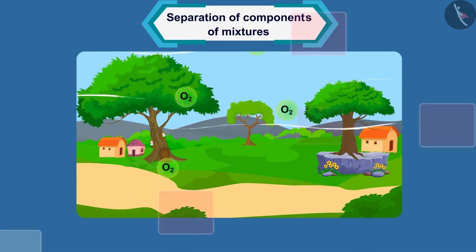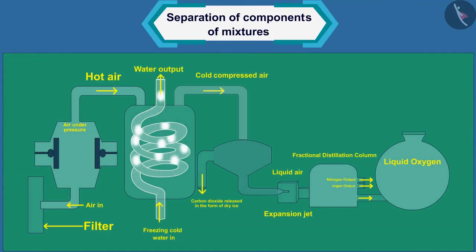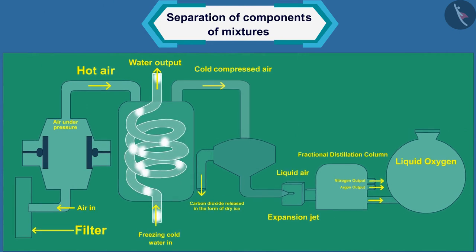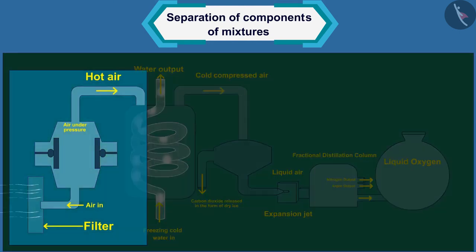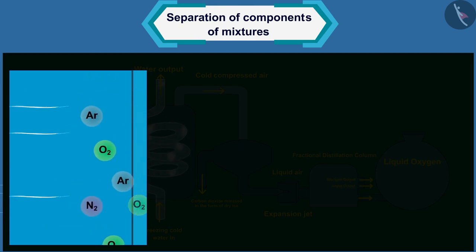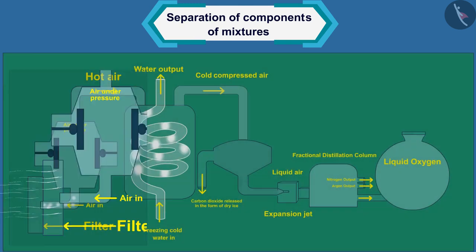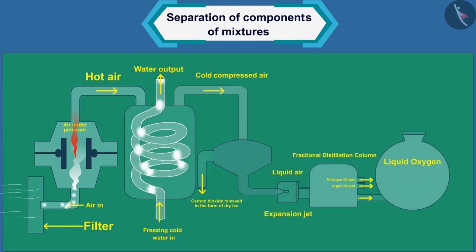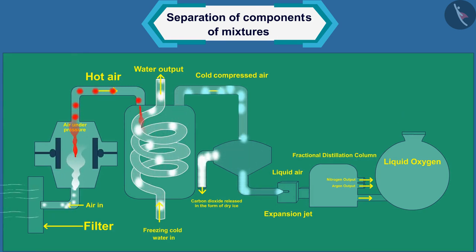Suppose we have to separate oxygen gas from air. To do this, first let us arrange the devices in this way. We have to separate the other gases present in the air to get oxygen from the air. To obtain liquid air, the pressure on the air is first increased and then air is cooled by decreasing temperature.